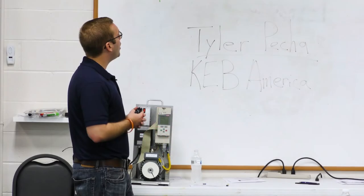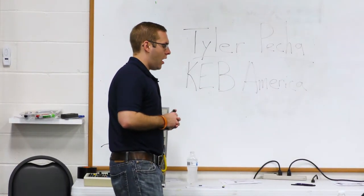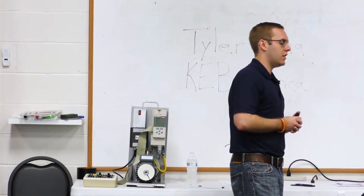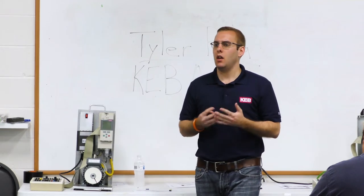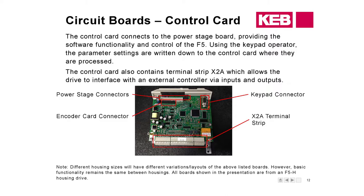Moving forward to the control card — this is the brains of the drive, where all the processing happens. It also contains the input and output terminal strip X2A, which is where you run all your hardware inputs and outputs. The keypad connects up in the corner, and it connects to the power stage via a ribbon cable run through a plastic guard. The encoder board also sits on top of the control card.